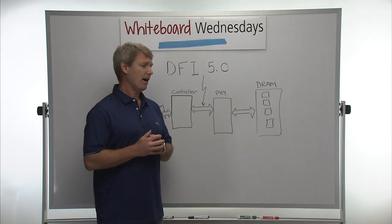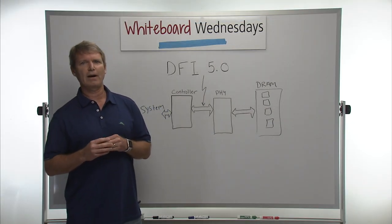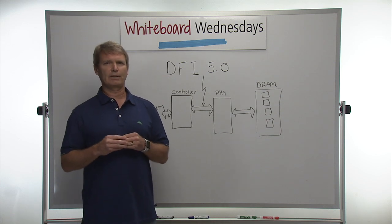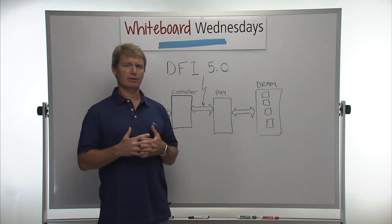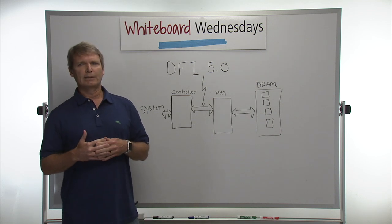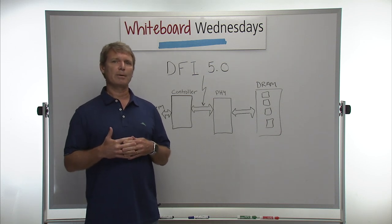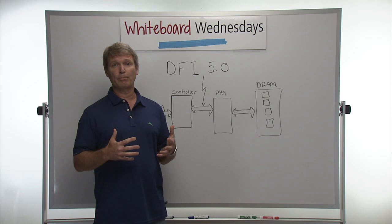So then the PHY is a very different device. So the PHY consists of a lot of different functions like analog functions. It's going to have things like delay locked loops in it. It's going to have delay lines and it's going to have IO buffers.